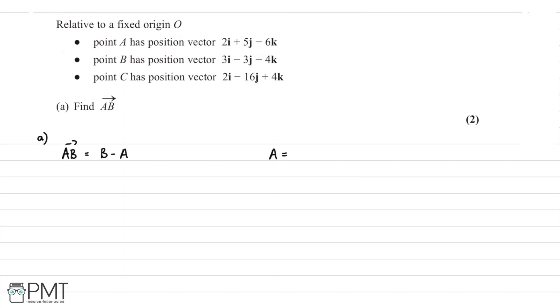I think it's quite a good way to add and subtract vectors using column vectors, because it's easy to see each direction as its own calculation. So we have A is 2, 5, and minus 6, and B is equal to 3, minus 3, minus 4.